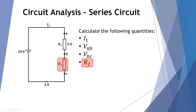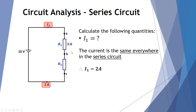So let's look at these four calculations. First of all, to find the current I1, the current is the same everywhere in a series circuit. So if we know the current at point A, B, C, or even at the bottom, it's going to be the same everywhere along the circuit. If there's 2 amps at the bottom, we know that current I1 must also be 2 amps. That holds true for all series circuits.